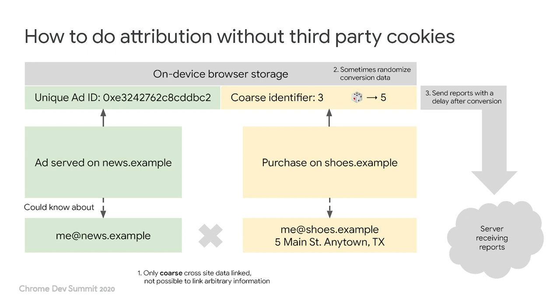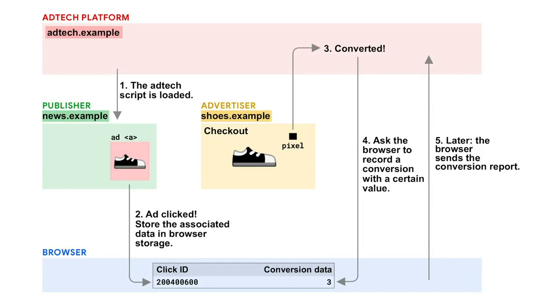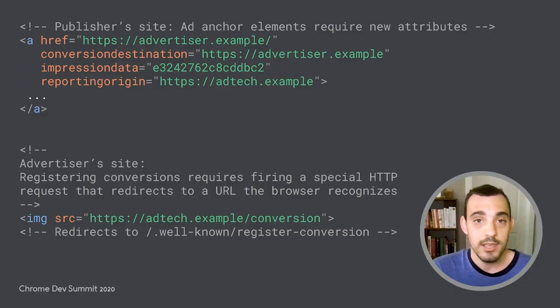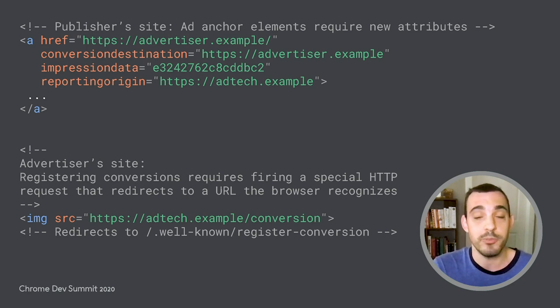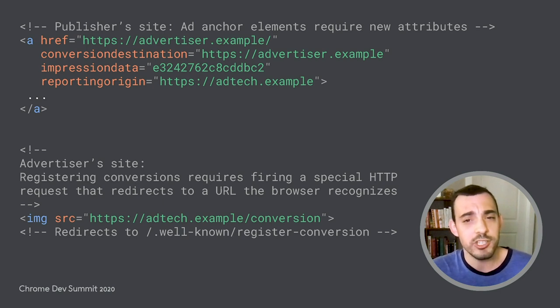All of these mitigations help us provide conversion measurement as a capability of the web platform via a new purpose-built API designed to provide the right amount of information while ensuring robust privacy guarantees on a technical level. Note that currently the API only supports attributing conversions to clicks and not yet views, but this is an enhancement we're working on. Here's a diagram showing the overall flow of the API. The API allows the ad on the publisher site to register its impression with the browser, and for the conversions to be registered on the advertiser's site. All this information gets stored internally by the browser and sent in a report at a later time linked together. Impression registration involves adding a few new attributes to the anchor element leading to the ad's landing page, and conversions are registered by responding to HTTP requests with a redirect to a special URL the browser recognizes.